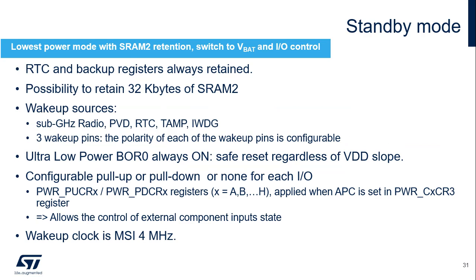The standby mode is the lowest power mode in which 32 kilobytes of SRAM2 can be retained. The automatic switch from VDD to VBAT is supported, and I/O levels can be configured by independent pull-up and pull-down circuitry. By default, the voltage regulators are in power-down mode and the SRAMs and peripheral registers are lost. The backup registers are always retained, and the ultra-low power brownout reset is always on. Each I/O can be configured with or without a pull-up or pull-down, applied via APC control bits. Wake-up sources are the sub-gigahertz radio, PVD, RTC, TAMP, IWDG, and three configurable wake-up pins. The wake-up clock is MSI at 4 MHz.